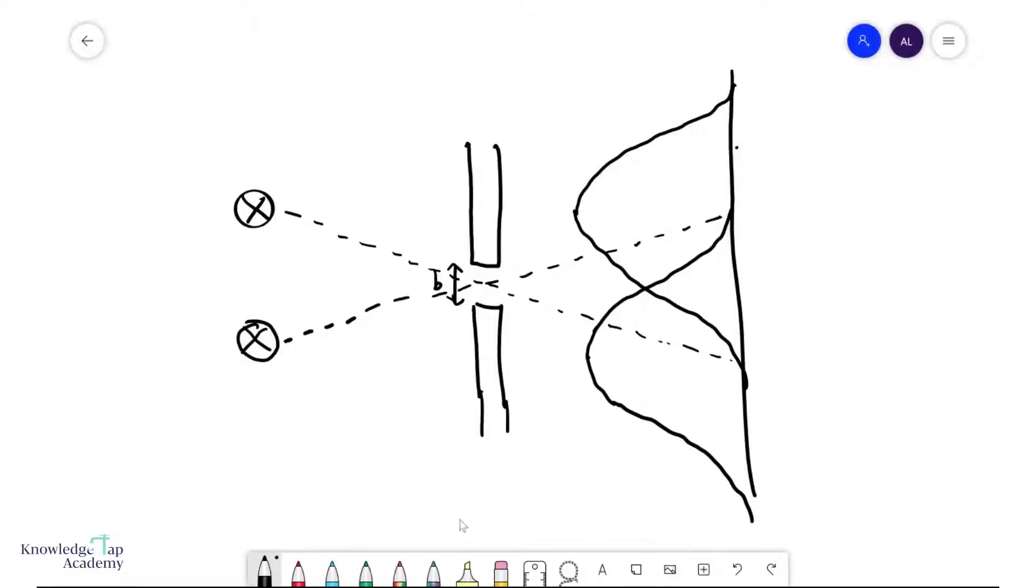Now in this video we're going to talk about a very nice concept, and this concept is of course Rayleigh's criterion. Now, what is Rayleigh's criterion? Basically, I have two sources here. Let's call this S1, let's call this S2.